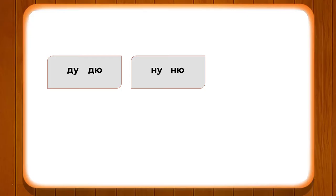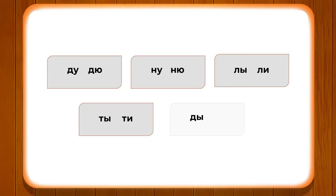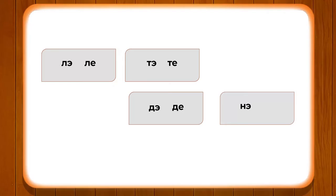Now let's pay attention to more consonant-vowel combinations. We have LU, LI, TU, TI, DU, ZHU, NU, NI. We have also seen how the sounds of LI, T, CHI, D, DI, M, and NI are produced. This is an important exercise to understand how hard consonants are used when combined with vowels.